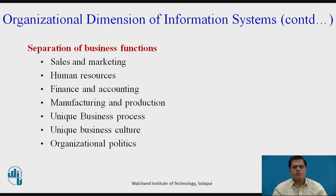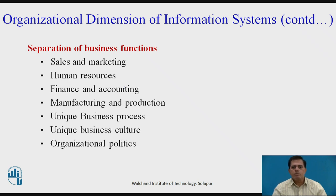In the organizational dimension, there is a separation of business functions carried out by different departments. Sales and marketing produces sales and marketing of the generated product. Human resources defines the structure of human resources required for processing the product. The finance and accounting department gives details of accounts and finance required for the organization. Manufacturing and production manufactures the product based on organizational policies and rules, with unique business processes generated in different departments.